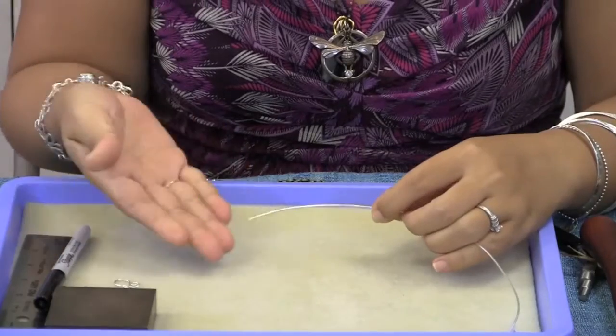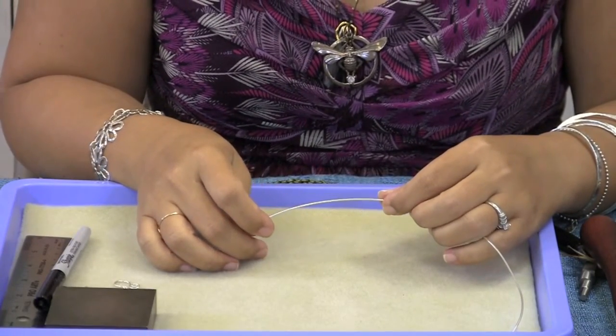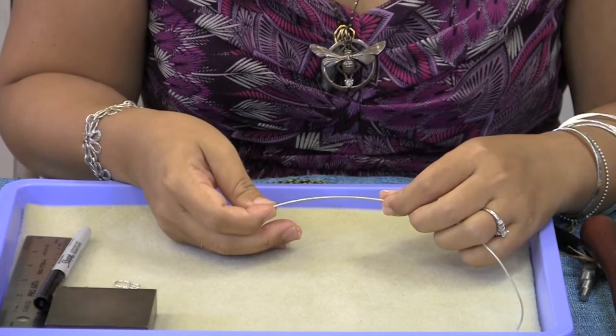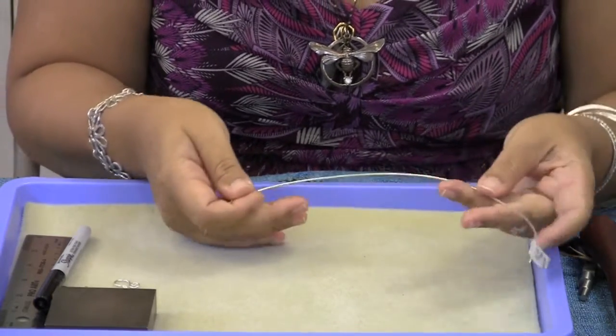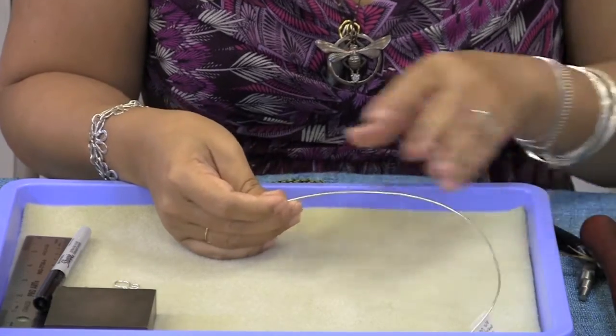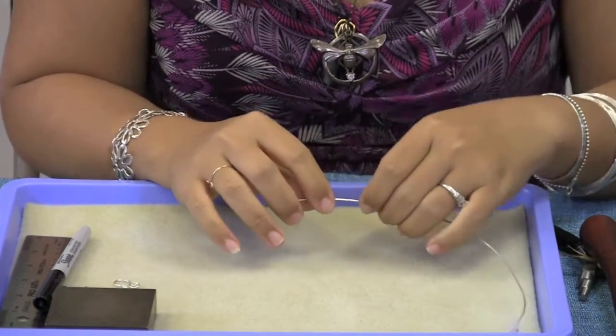I am going to start making my hook and eye clasp. I have my wire that I'm going to make my spiral hook clasp. In this case this is 16 gauge soft sterling silver wire. I have a longer piece than I need because it's much easier to manipulate the wire when it's long like this rather than pre-cutting your wire.